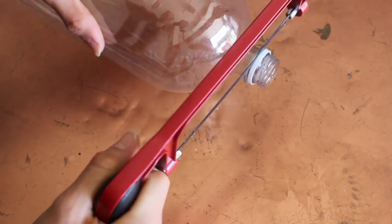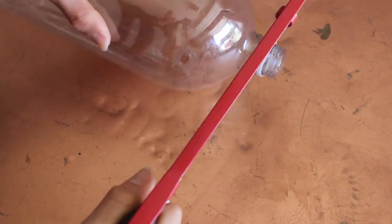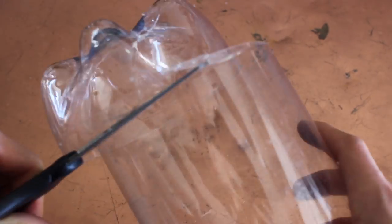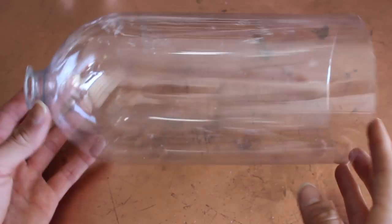You want to grab your soda bottle and handsaw and just cut directly beneath the threads of the cap area. Then take your scissors, and typically the soda bottles have a little line where the label used to be, and just follow that line.